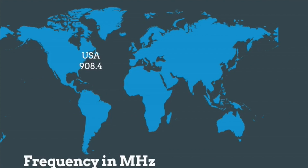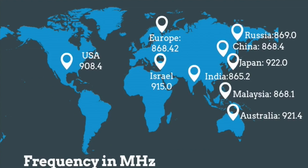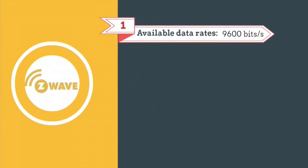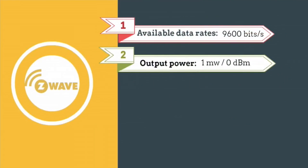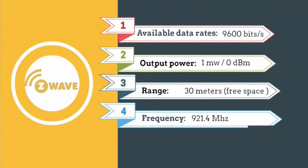It operates at 908.42 MHz in the US and Canada, and 921.4 MHz in Australia and New Zealand, but uses other frequencies in other countries depending on their regulations. The available data rates include 9,600 bits per second and 40 kilobits per second, and they can reach up to 30 meters.